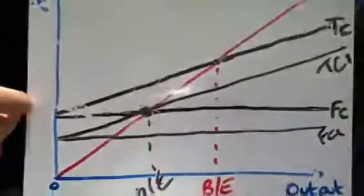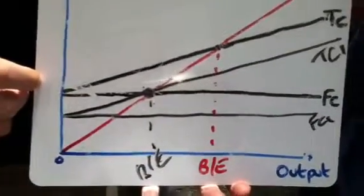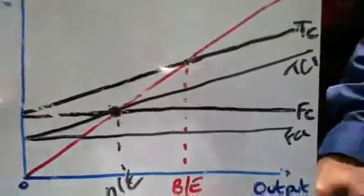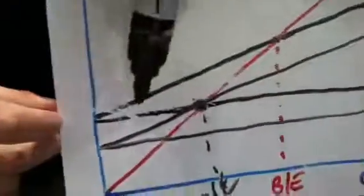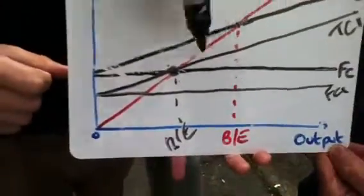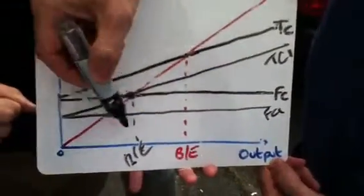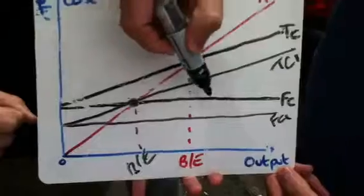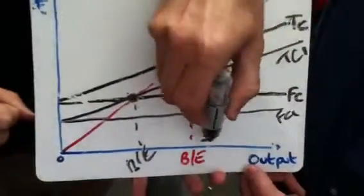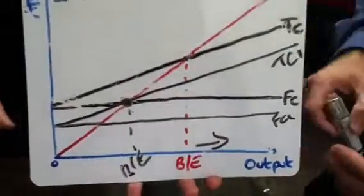But will that always be the case for somewhere like this takeaway? It won't always be the case because business is never certain. The problem with locating outside of town is that your prices cannot be as high — if you have a town centre location your prices are much higher. So what might happen with the break-even chart is if you're charging lower prices, basically your revenue line is going to be much flatter and not as steep.